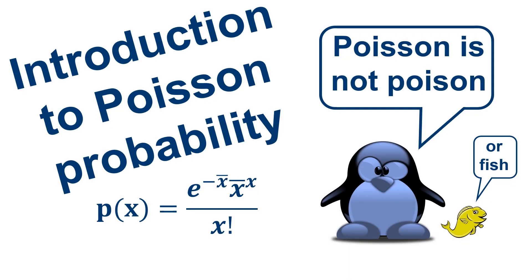Welcome to this introduction to Poisson probabilities. We'll look at the Poisson probability equation, its mathematical assumptions, and a few examples of applications. First things first, this distribution is named after Simeon Denis Poisson, so it shouldn't be confused with the English word poison, or the French word poisson, which means fish.